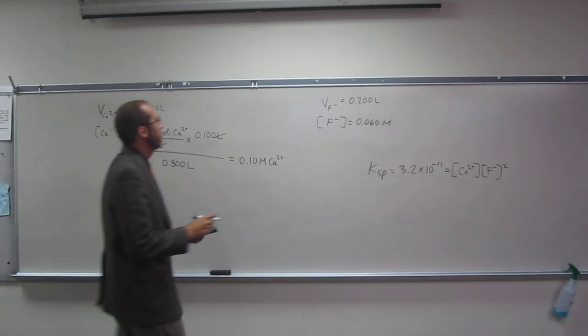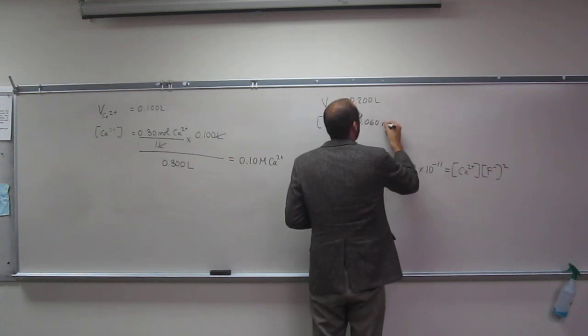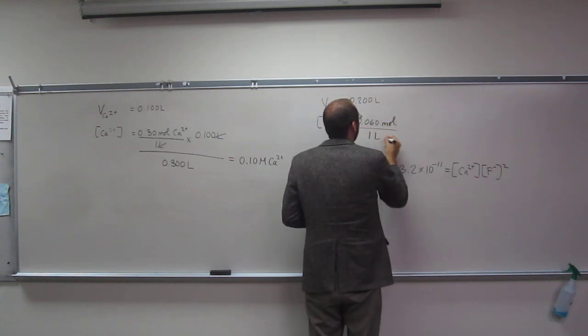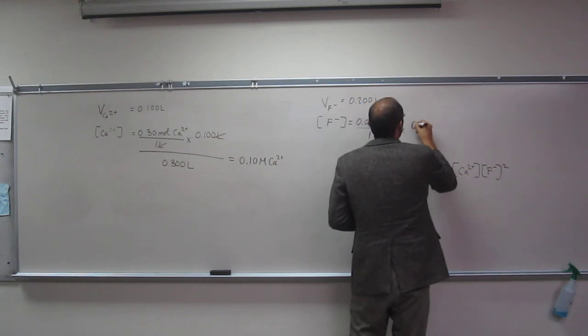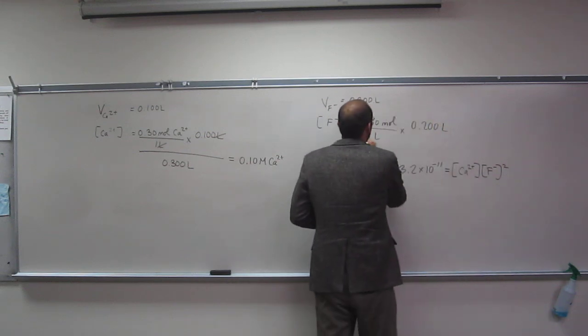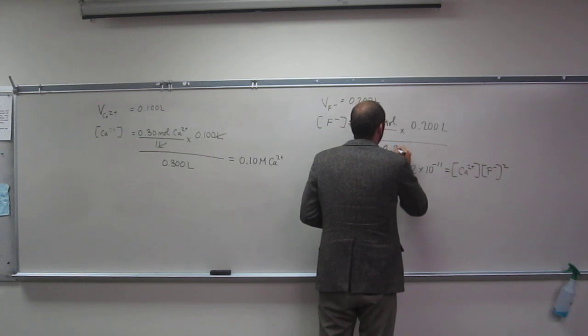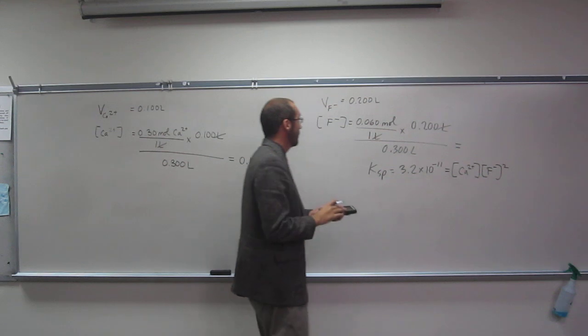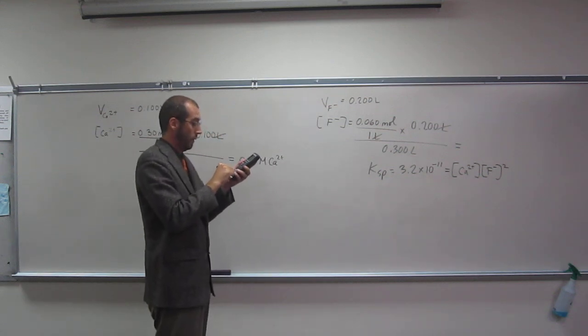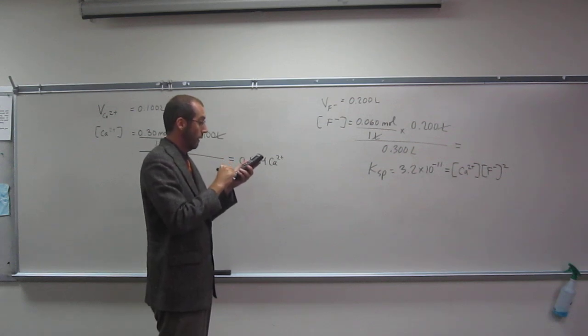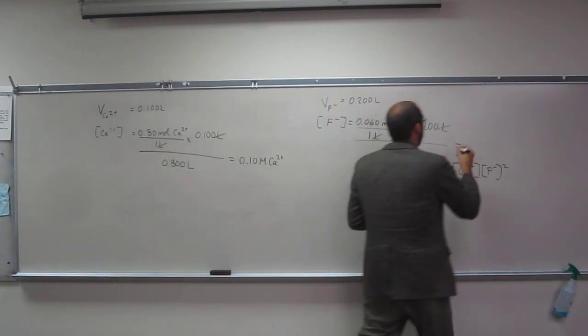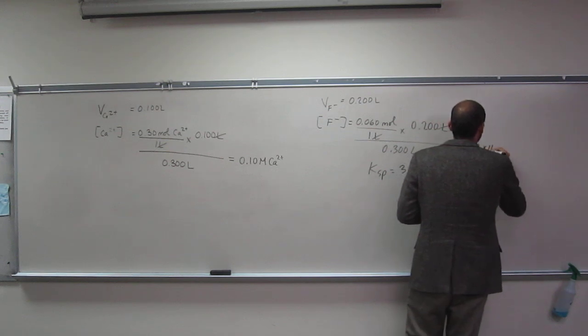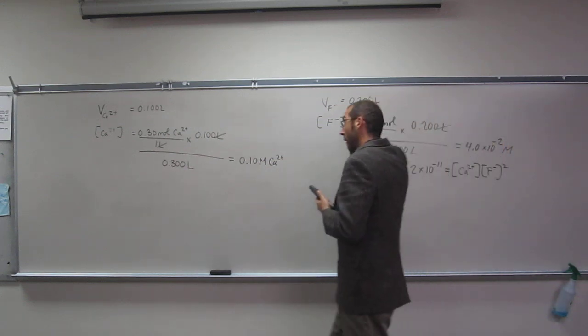Let's do the same with F-. Moles per liter times 0.2 liters divided by 0.300 liters. Liters cancel, and that gives us the molarity of F-. So 0.06 times 0.2 divided by 0.3 equals 4.0 times 10 to the negative 2 molar F-.